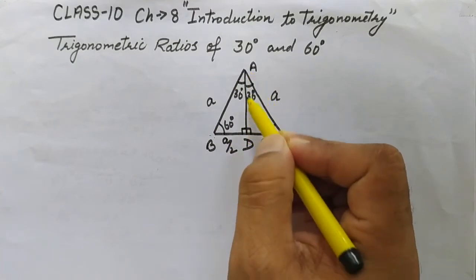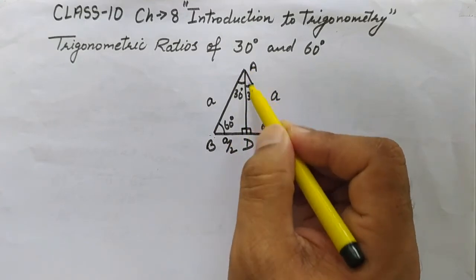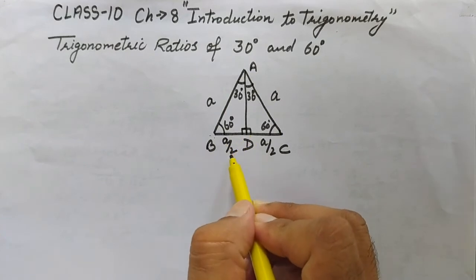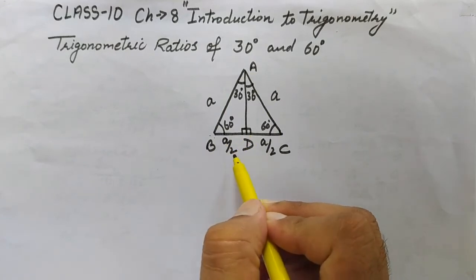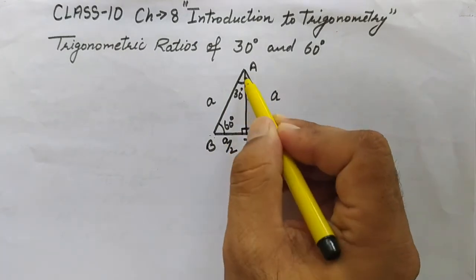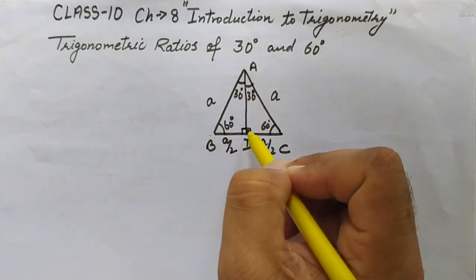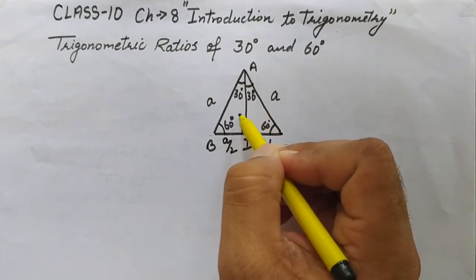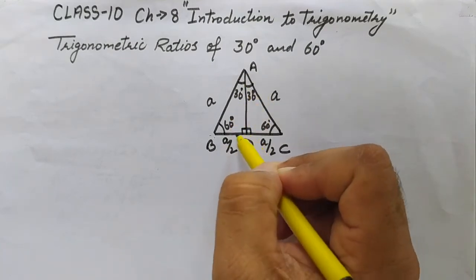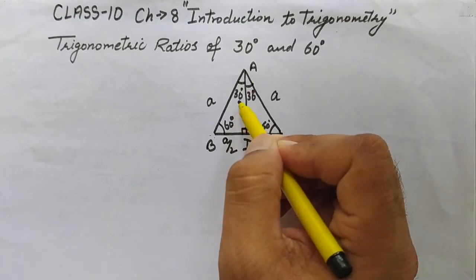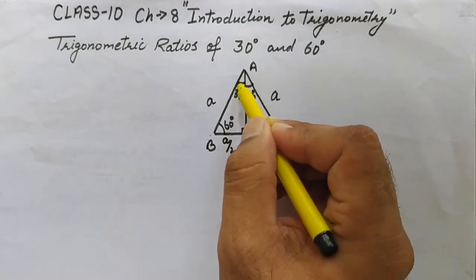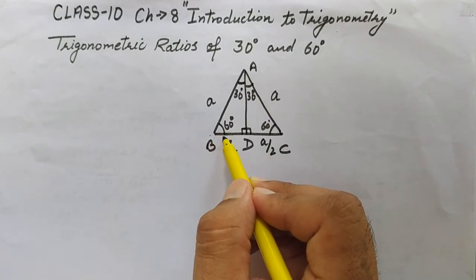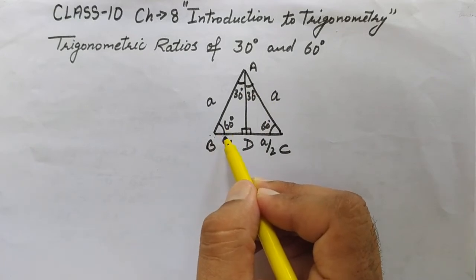In right angle triangle ADB, we can find AD using the Pythagorean theorem. We have AB = a and BD = a/2. Once we find AD, we can calculate all trigonometric ratios at both 30 degrees and 60 degrees, and prove them geometrically.